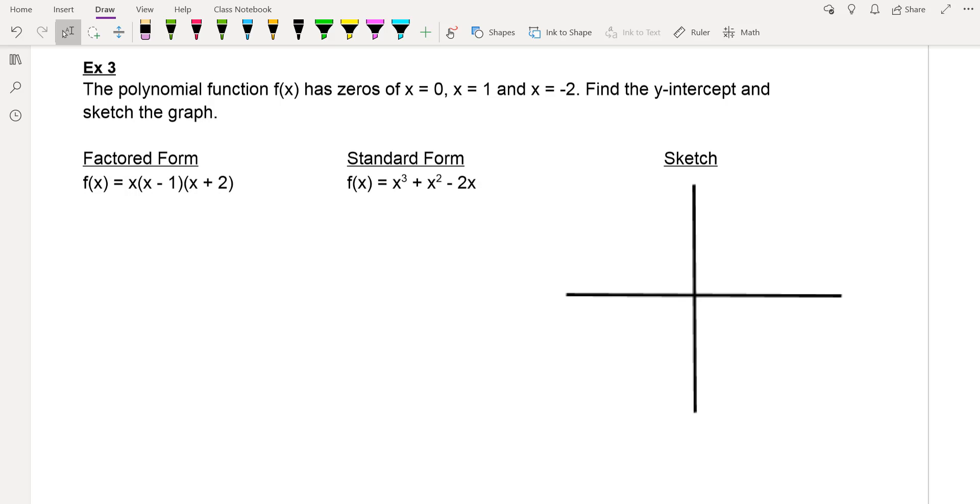So here we are, we've got these zeros: x equals zero, x equals one, and x equals two. So I've got these three zeros, which is really cool, and then I gotta figure out what the y-intercept is and do a little sketchy of the graph.